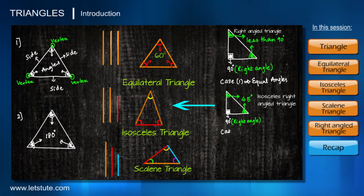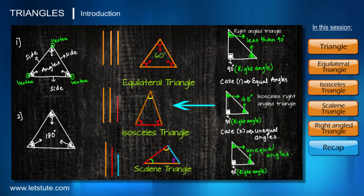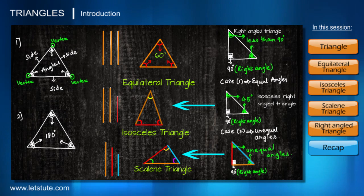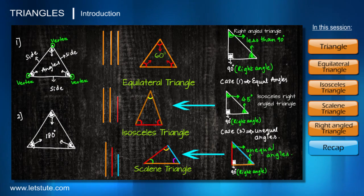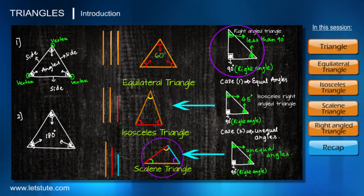In case two, if the two remaining angles other than the right angle are not equal to each other, then all three angles are different, meaning all three sides will also have different lengths. This follows the property of a scalene triangle, where all three sides have different lengths and all three angles have different measures. Such a triangle is called a scalene right-angled triangle.